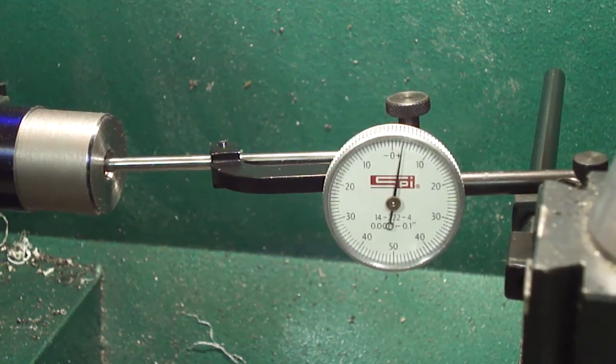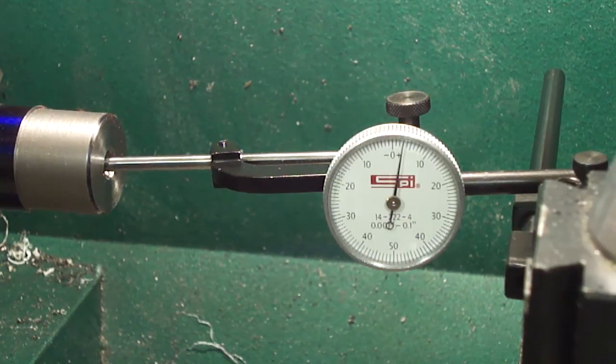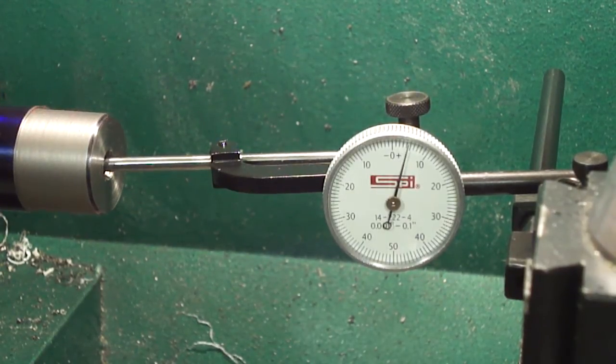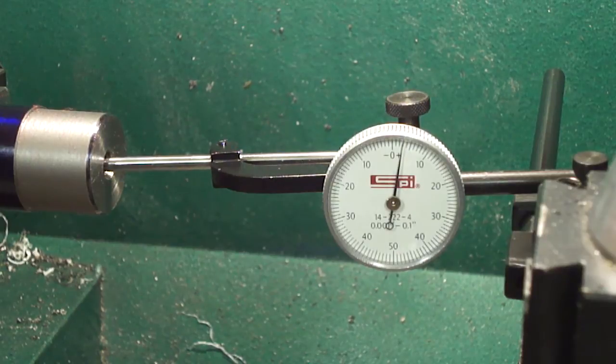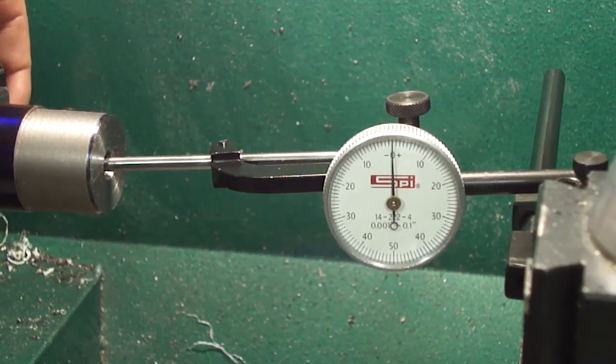There are six lands and grooves in this barrel, and as we move the headstock of the lathe, you'll be able to see the needle on the indicator jumping up and down. That's actually the indicator needle in the bore riding over the lands.